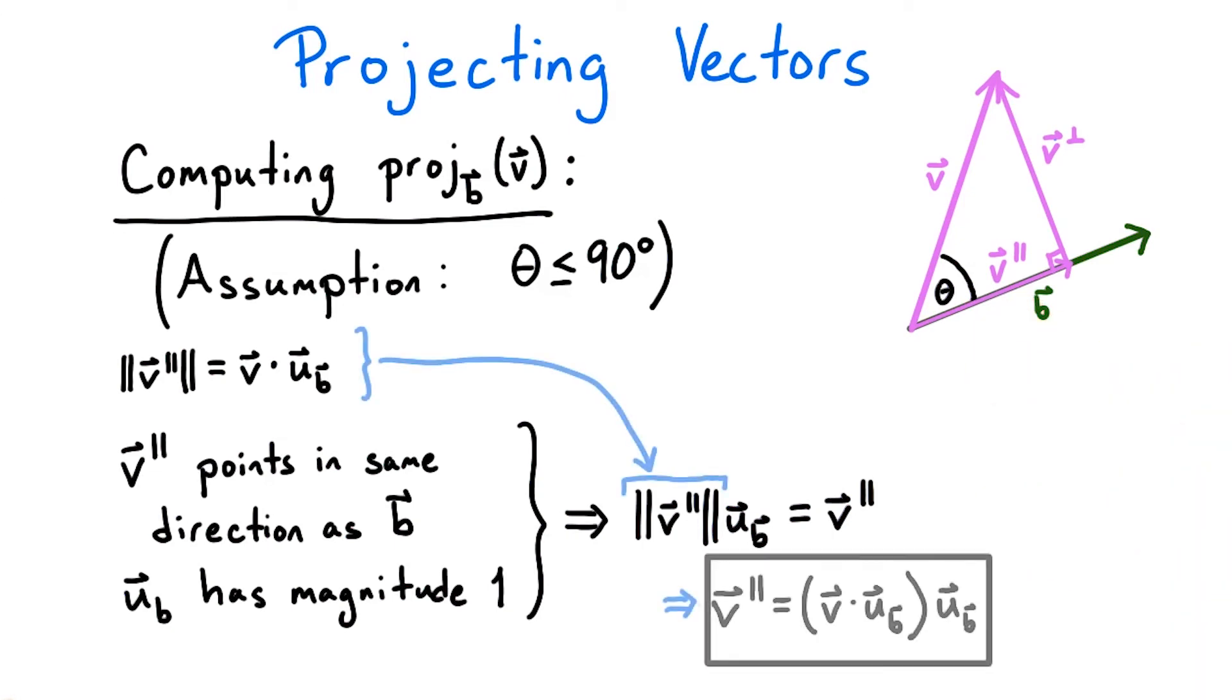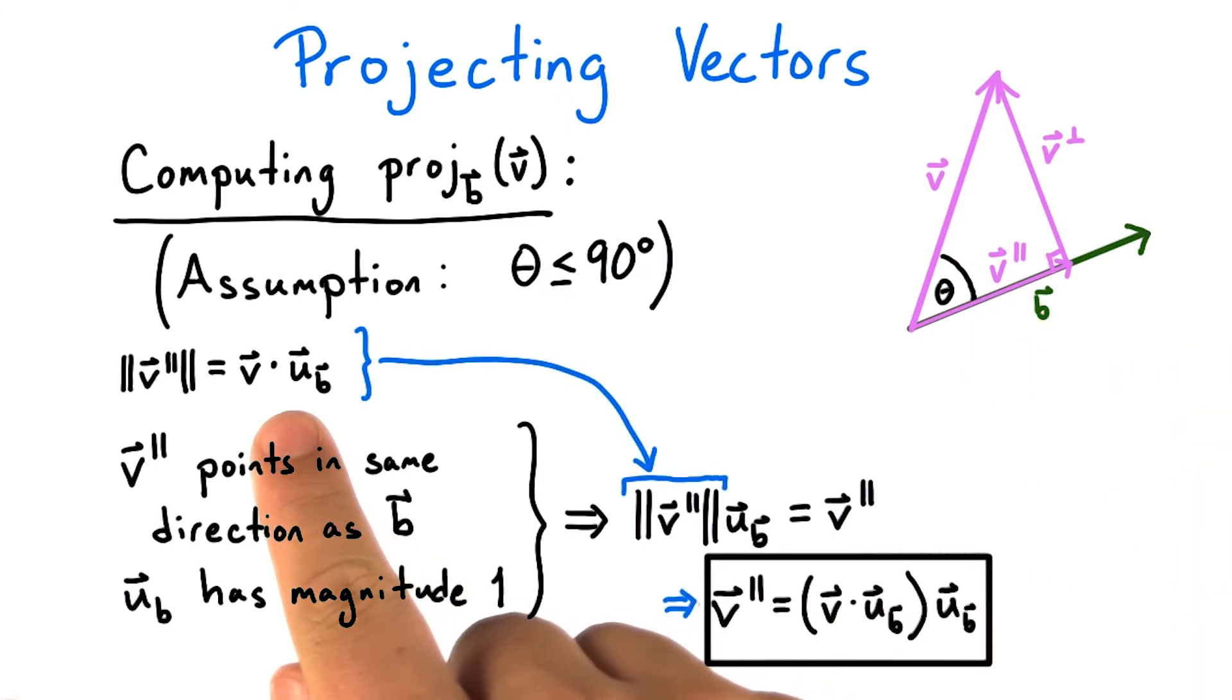Now let's plug in this expression for the length of v parallel. And what we end up with is this formula. v parallel is exactly the normalization of b times the scalar v dot the normalization of b.